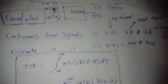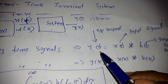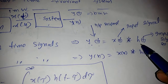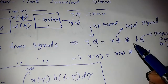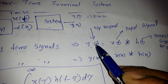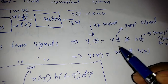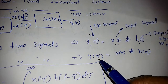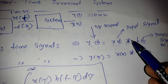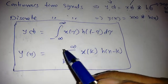To find Y of T, we convolve X of T with H of T, where H of T is called the impulse response of the system. The convolution symbol is used here — X of T is the input, H of T is the impulse response, and Y of T is the output. Similarly for discrete-time signals, Y of N is equal to X of N convolved with H of N.